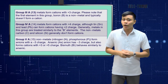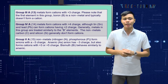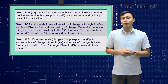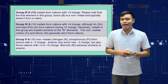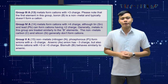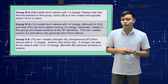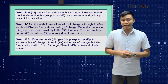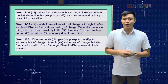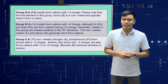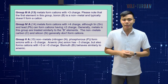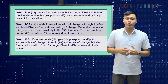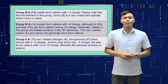Group 3A metals form cations with a +3 charge. Please note that the first element in this group, boron, is a non-metal and typically doesn't form a cation. Group 4A metals form cations with a +4 charge, although tin and lead can form cations having a +2 charge. Generally, metals in this group are treated similarly to the B elements. The non-metals carbon and silicon generally don't form cations.